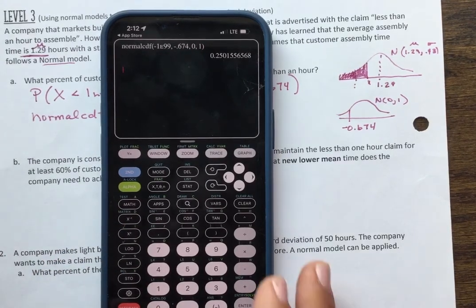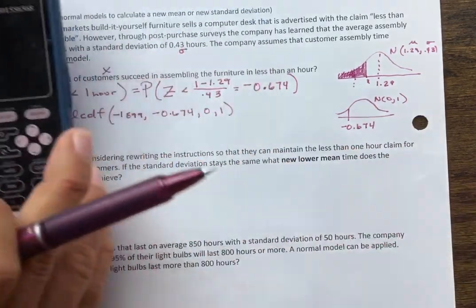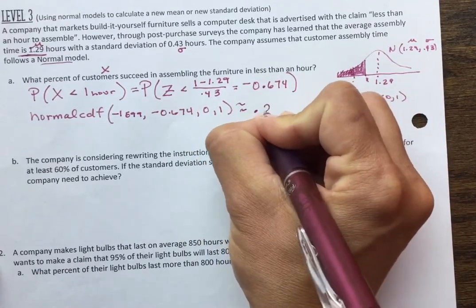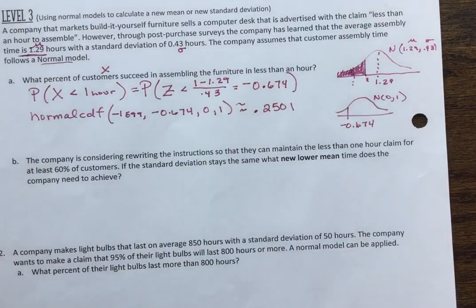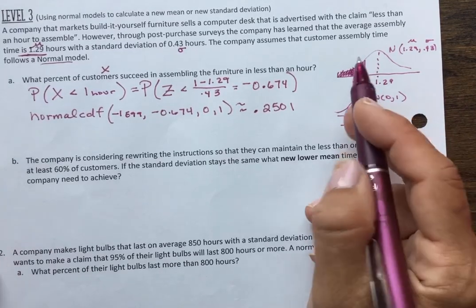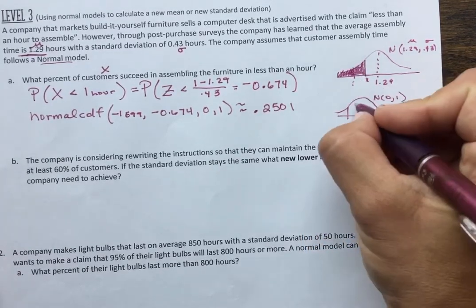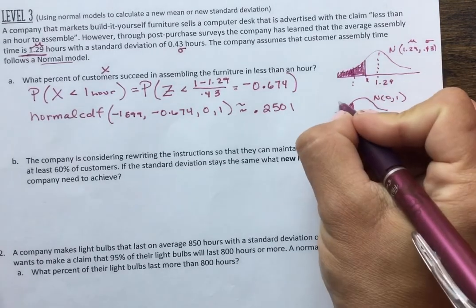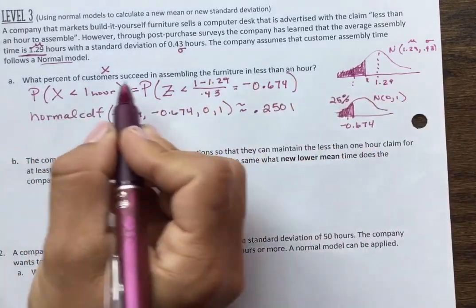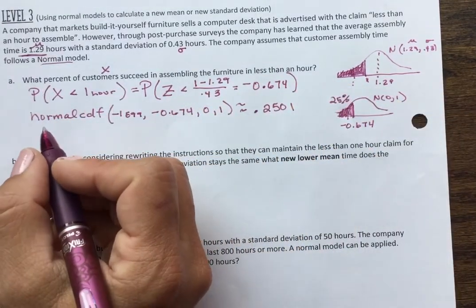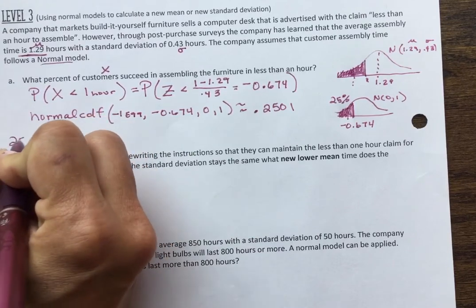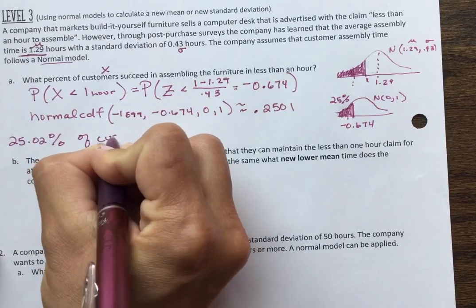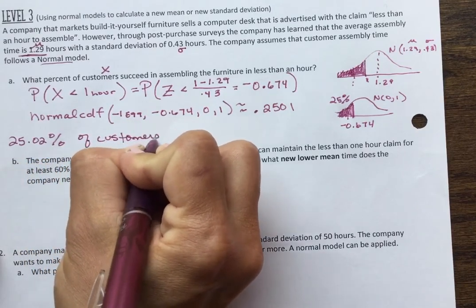And I get about 25%, which does make sense to me based on what I know from the empirical rule. If I was exactly one standard deviation away, this tail would be 16%. But I'm less than one standard deviation away, which is why I have about 25% in this tail. So to answer the question, always put it in context, 25.02% of customers finished in less than one hour.